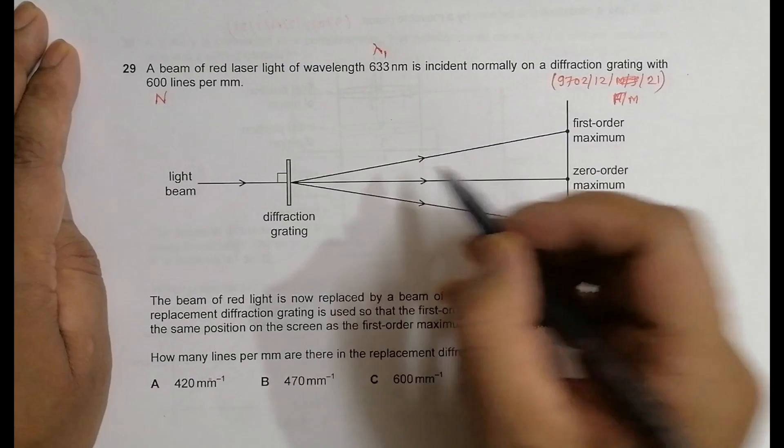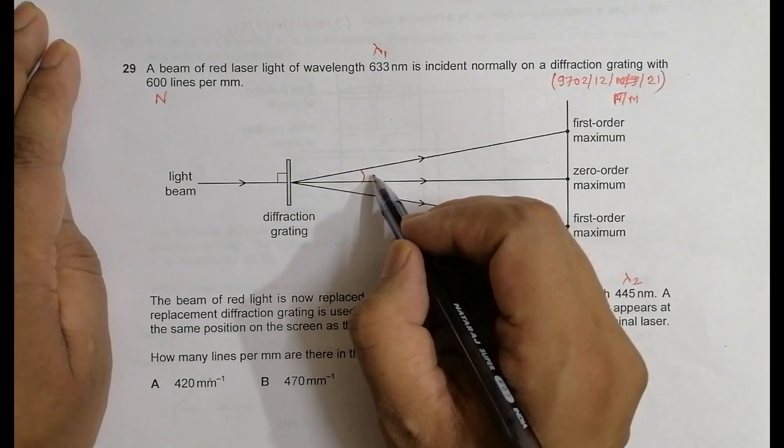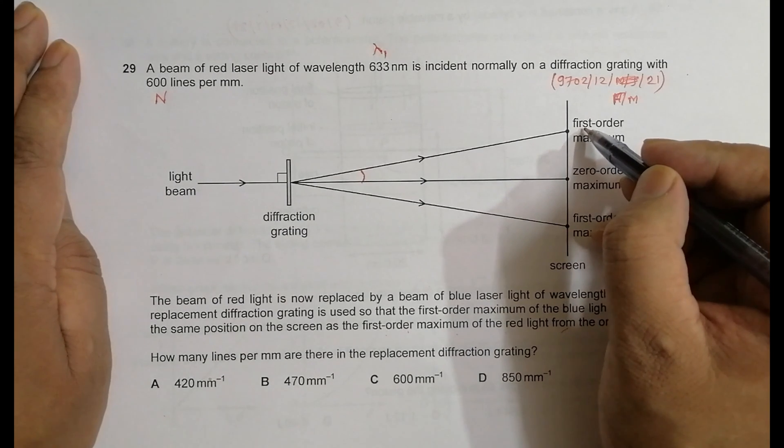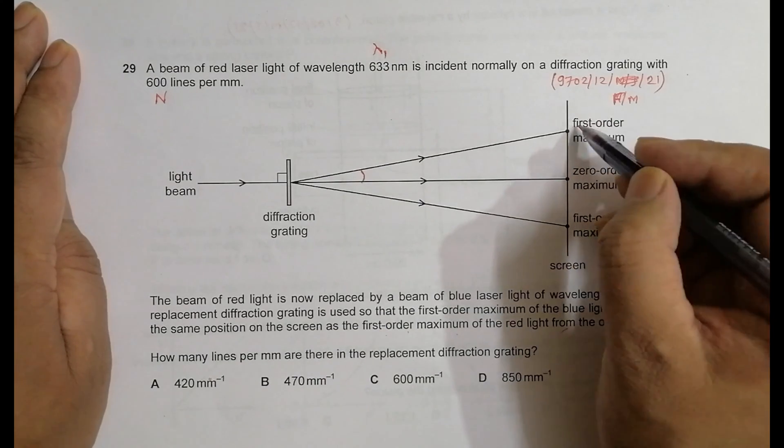That means the angle at which first order is formed is the same, because it has to form in the same location whether the light is red or blue. By changing one thing or the other, we have to make sure that the first order maximum will be at the same position, which means this angle is the same for both cases.